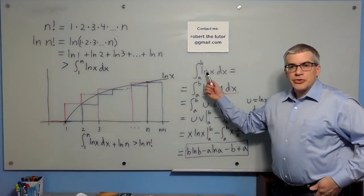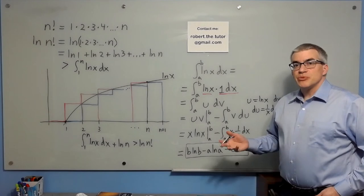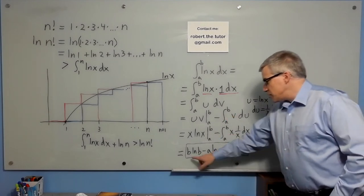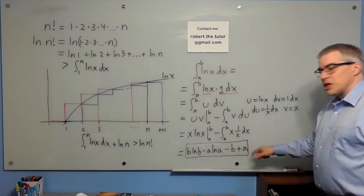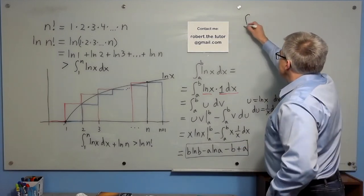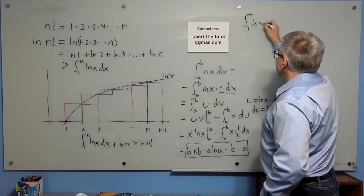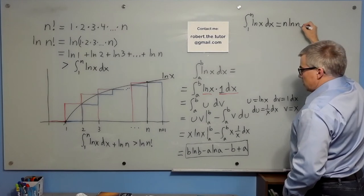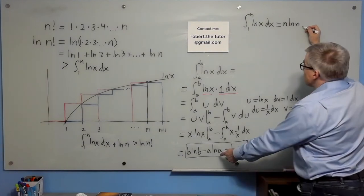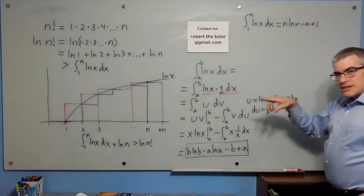We can integrate natural log of x dx from a to b using integration by parts. And our final answer is b natural log b minus a natural log a minus b plus a. So if we were to use that to integrate 1 to n natural log x dx, we get n natural log n minus 0 minus n plus 1. So that's the exact answer for the integral, which means the natural log of n factorial is in between this quantity and this one.